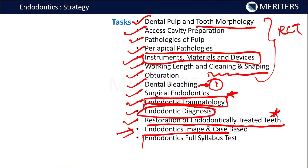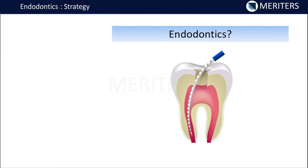After covering all these tasks, there will be a full syllabus test to assess understanding. If you are thorough with these tasks, we generally presume you will be done with 90 to 95 percent of the questions coming in the exam. Endodontics, considered the heart of dentistry, comprises RCT procedures, instruments, and extra information like bleaching and restoration of endodontically treated teeth. These are the things you have to complete to get good marks in endodontics.